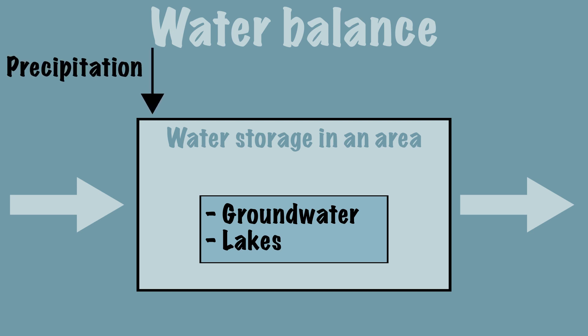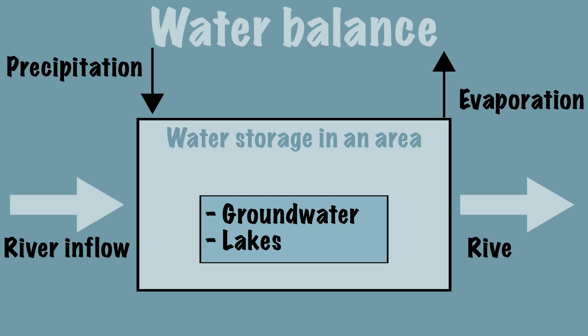New water can be supplied when it rains or when rivers supply water. At the same time, water disappears again when it evaporates or when rivers take the water with them. If the inflow equals the outflow, then there is a balance, and the amount of water in the area remains the same.